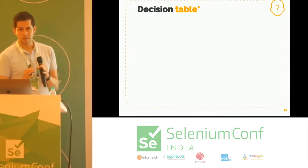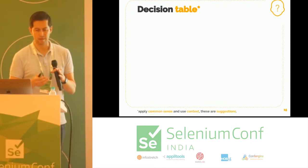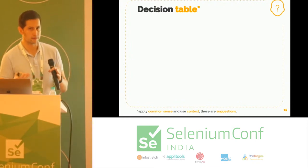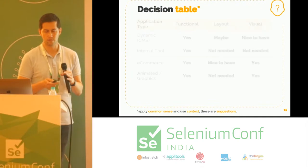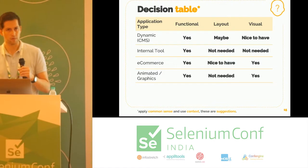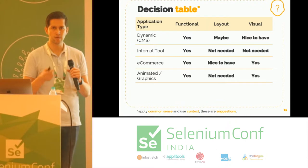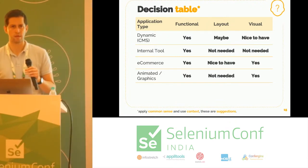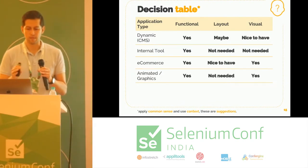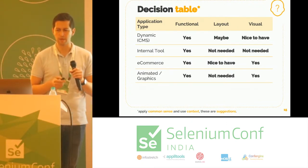That's why we came up with this decision table. First, I want to highlight that this isn't a silver bullet — this is a guideline that teams could use to decide what to use. We have four types of applications, and we strongly believe that functional testing is always a must. It gives us a sense of security. Then we came up with these keywords: maybe, nice to have, and not needed.